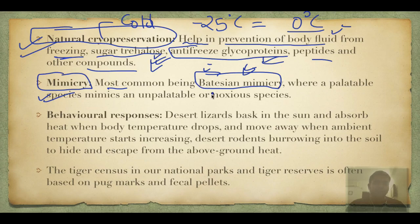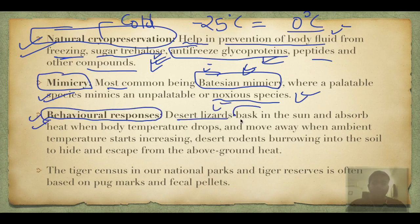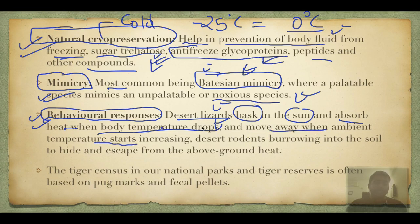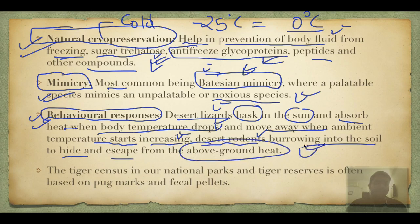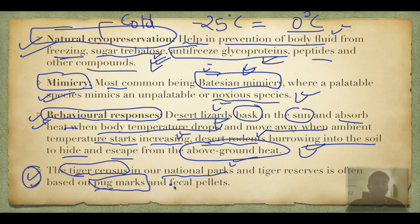Behavioral responses are also part of adaptation. Desert lizards bask in the Sun because they cannot regulate their own temperature — they absorb heat when body temperature drops, but move away when ambient (environmental) temperature gets very high. Desert rodents burrow into the soil to hide and escape from above-ground heat. A passing remark: tiger census in national parks is done by pug marks and fecal pellets.